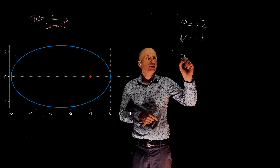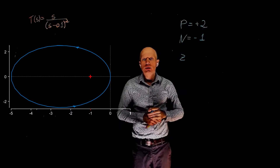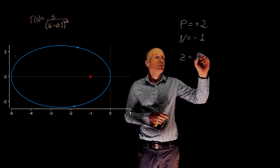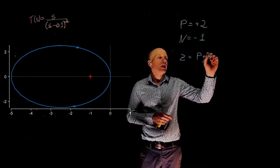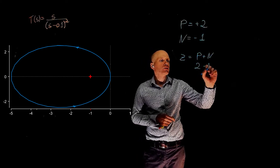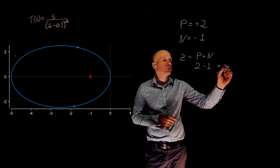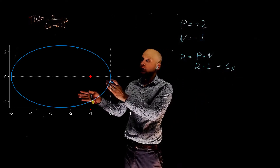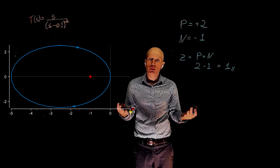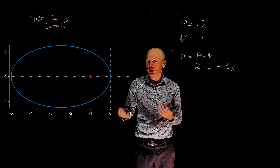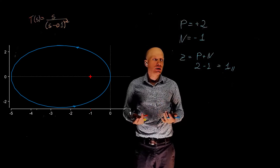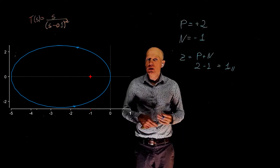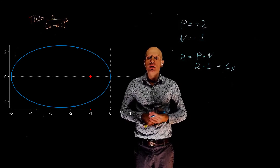The number of unstable poles of the closed-loop system is simply P plus N, that is 2 minus 1 equals 1. This means that if this function is put in a negative unit feedback loop, the resulting system will have one unstable pole — the system is closed-loop unstable.